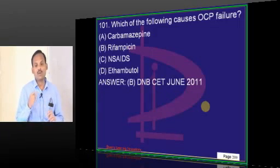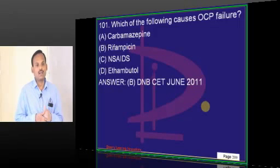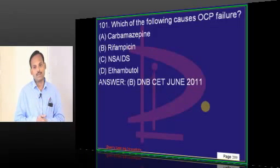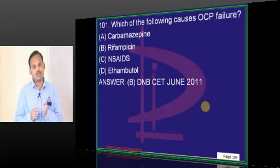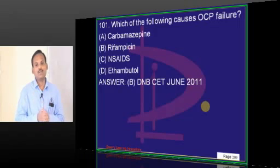Gut flora plays a very important role in enterohepatic recycling. The deconjugation enzymes are produced by the gut flora. All hormones including oral contraceptive pills undergo significant enterohepatic cycling. Whenever the OC pill is conjugated in the liver, it again undergoes deconjugation in the gut, and the deconjugated estrogen and progesterone get reabsorbed. But if the flora is removed, it will not be able to deconjugate — therefore estrogen and progesterone will be lost in bile and feces.